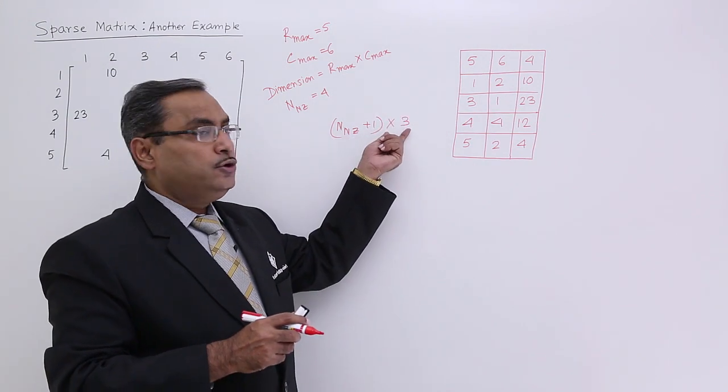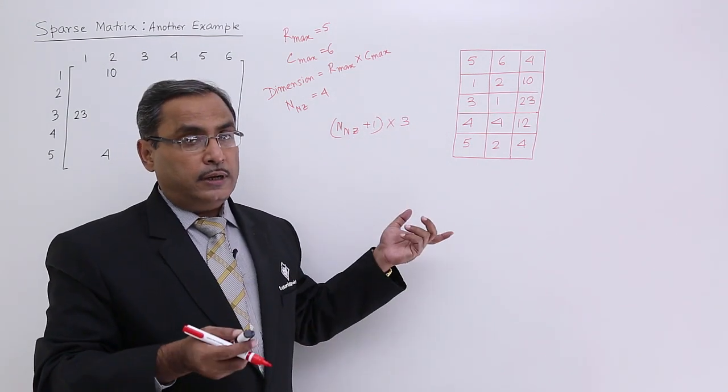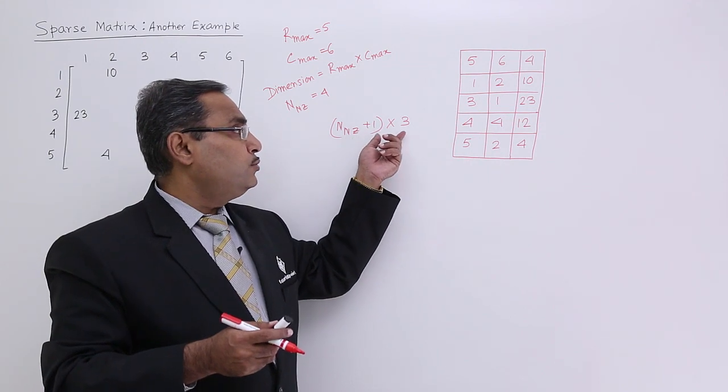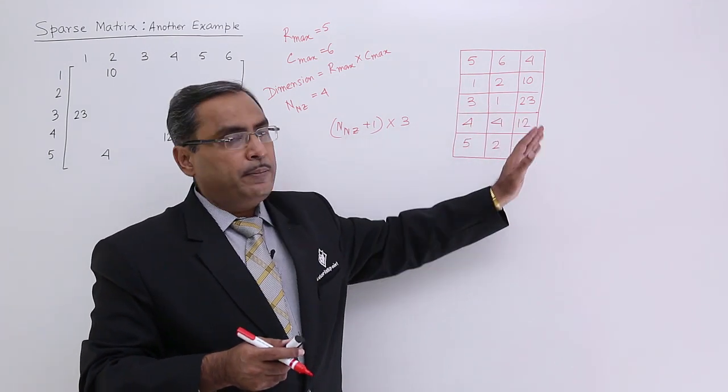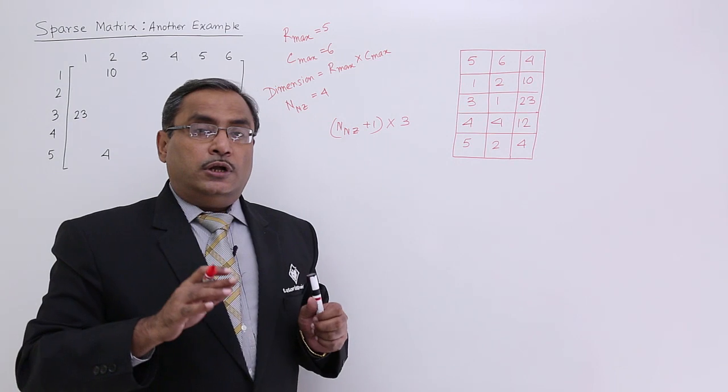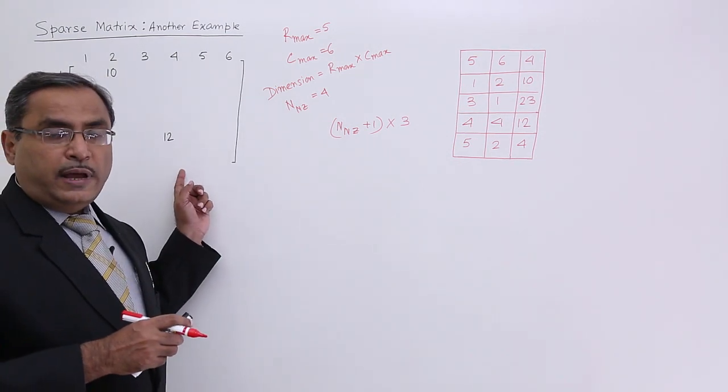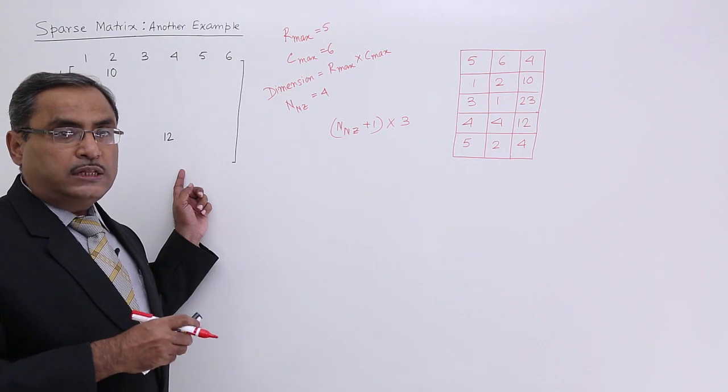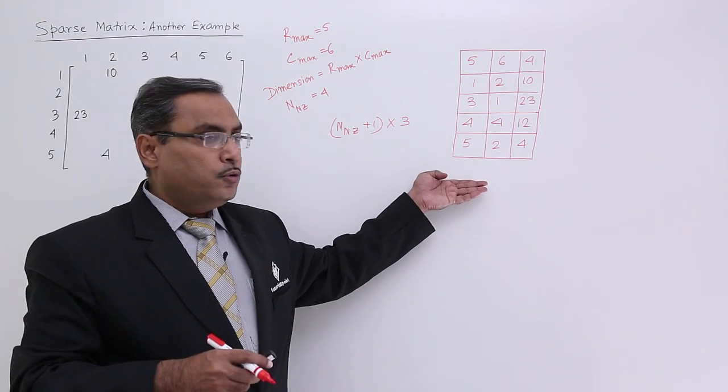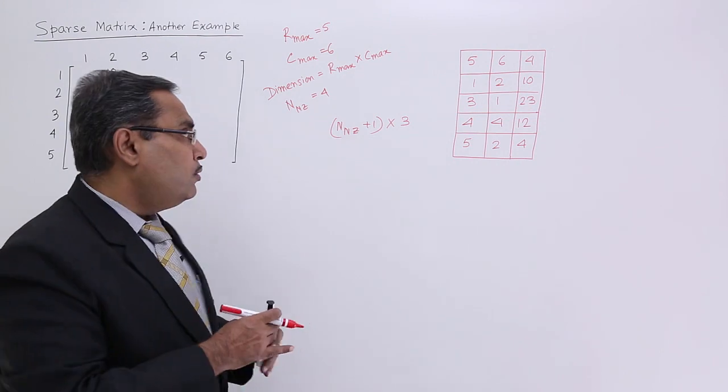This is the size into number of non-zero data plus 1 into 3. 3 means always it will be having 3 columns. Now, if we populate this particular matrix with other non-zero values, then here the number of rows will increase.